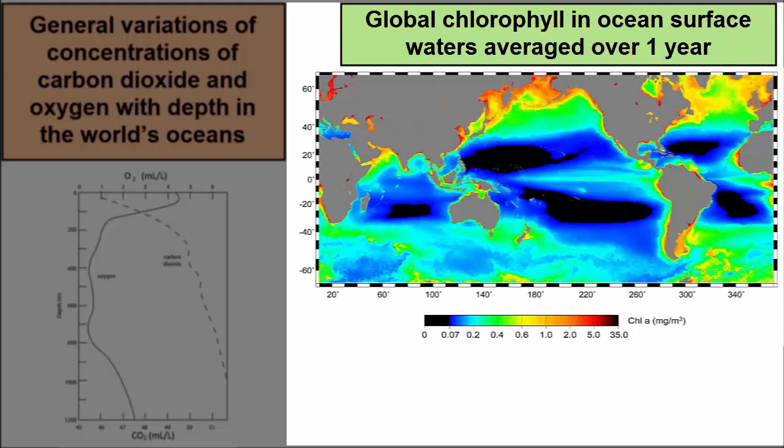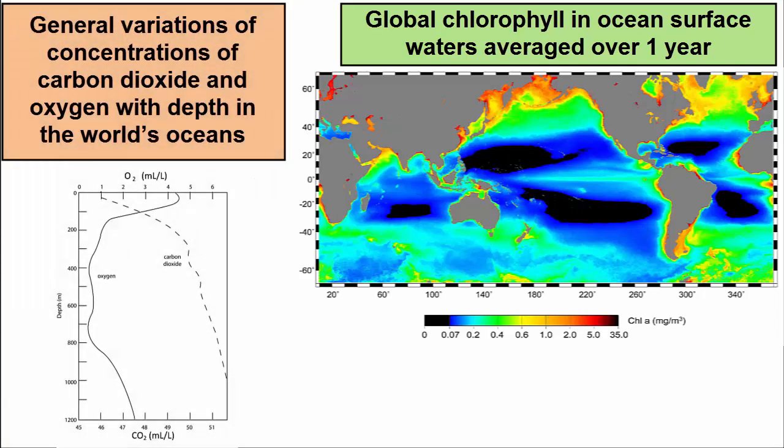This map is showing global chlorophyll averaged over one year's time on the planet. Plenty of questions still, but that's how we start.